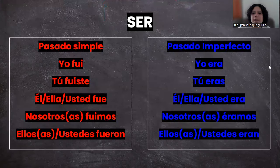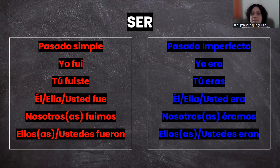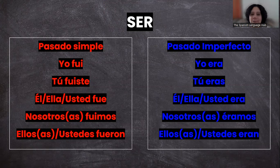Let's start with the conjugations of ser. Before I start and before I forget, I will leave you a link to a video where I explain the differences between ser and estar — I'm not going to explain that today. Today I'm just going to explain the differences between ser in pasado simple and pasado imperfecto, and estar in pasado simple and pasado imperfecto. So if you are not clear about the difference between ser and estar, please watch the video I'm going to link below.